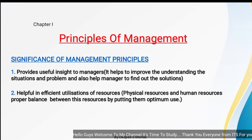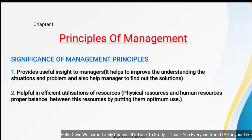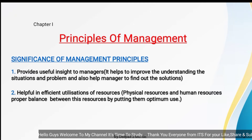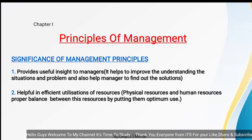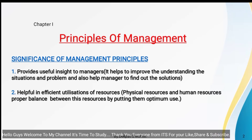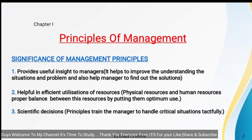How can we use resources optimally? Optimum use means wastage must be reduced and cost must also be reduced. If wastage is reduced, expenditure automatically decreases and maximum output can be achieved. This applies to both physical resources such as machines and human resources such as workers and employees, who are both assets of the organization. We have to maintain a proper balance, and management principles help us use these as guidelines for efficient utilization of resources.